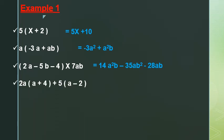Number 4: 2a by (a + 4) in the first bracket, and 5 by (a minus 2) in the second bracket. Distribute 2a first: 2a by a equals 2a squared, and 2a by 4 equals 8a. Then 5 by a equals 5a, and 5 by negative 2 equals negative 10. We add 8a plus 5a equals 13a, giving 2a squared plus 13a minus 10.